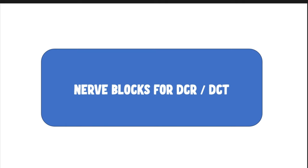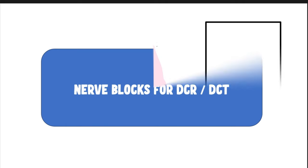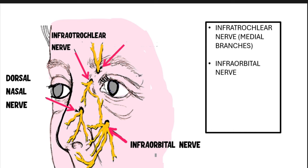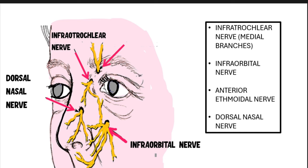First, let us talk about the nerve blocks for DCR and DCT. The diagram displayed here depicts the essential nerves that need to be anesthetized. They include the infratrochlear nerve, the infraorbital nerve, the anterior ethmoidal nerve, and a branch of the anterior ethmoidal nerve which is the dorsal nasal nerve. The anterior ethmoidal nerve is not visually represented in this diagram due to its extraconal position; however, its relevance and role shall be discussed in the accompanying slides.